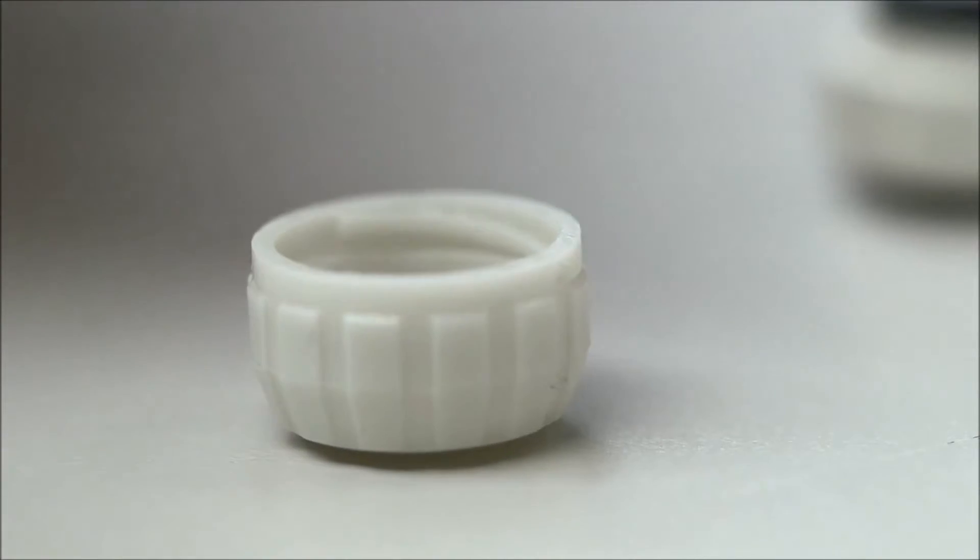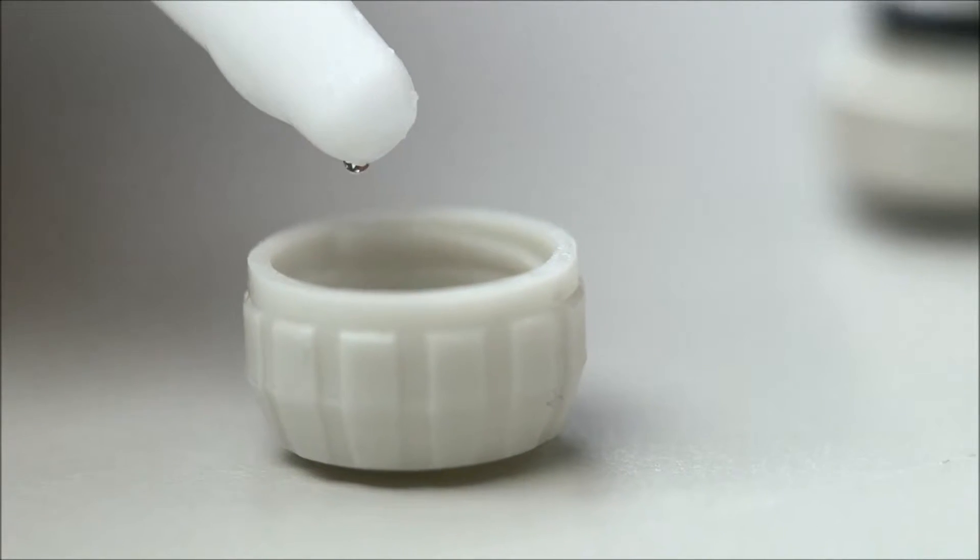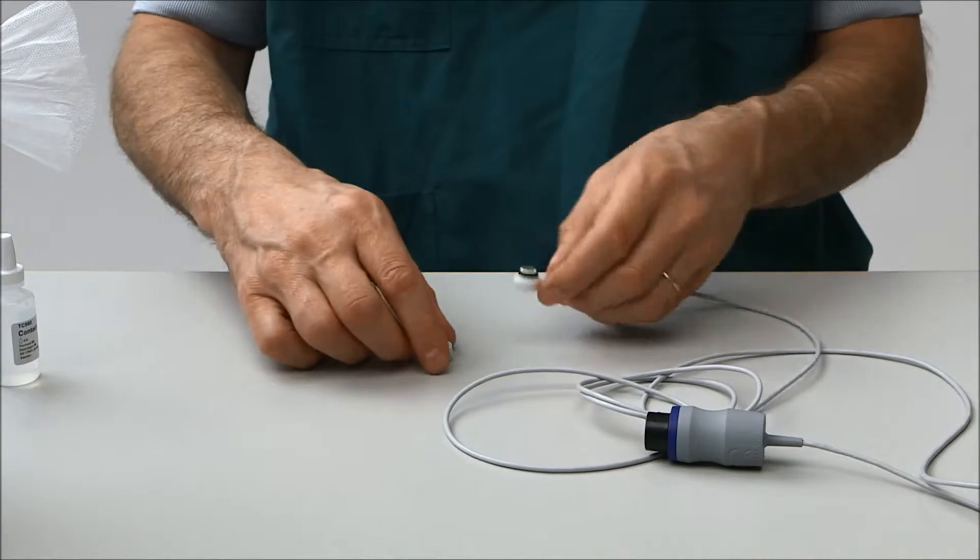For longer storage, put several drops of contact liquid in the protective cap before placing the cap on the electrode.